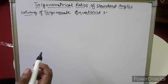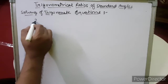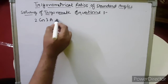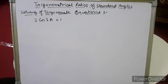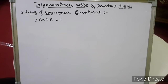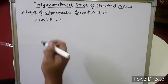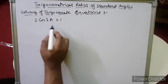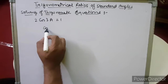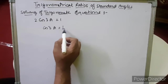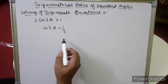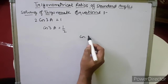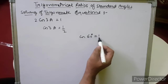Suppose we are given 2cos(3a) = 1, and we need to calculate the value of angle a. We can cross multiply the 2, so it becomes cos(3a) = 1/2. In cos, we know that the value of cos 60° is 1/2.